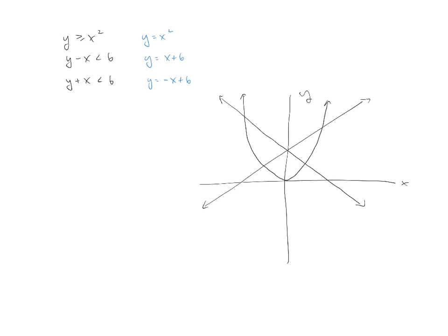And then before I get ahead of myself too far, I do want to remember the second two, because of the strictly less than, those are going to be the dashed lines. So I'll come back over here, and I'll make these dashed. So both of the lines will be dashed lines, because we can't include the lines themselves. So those are the dashed lines.